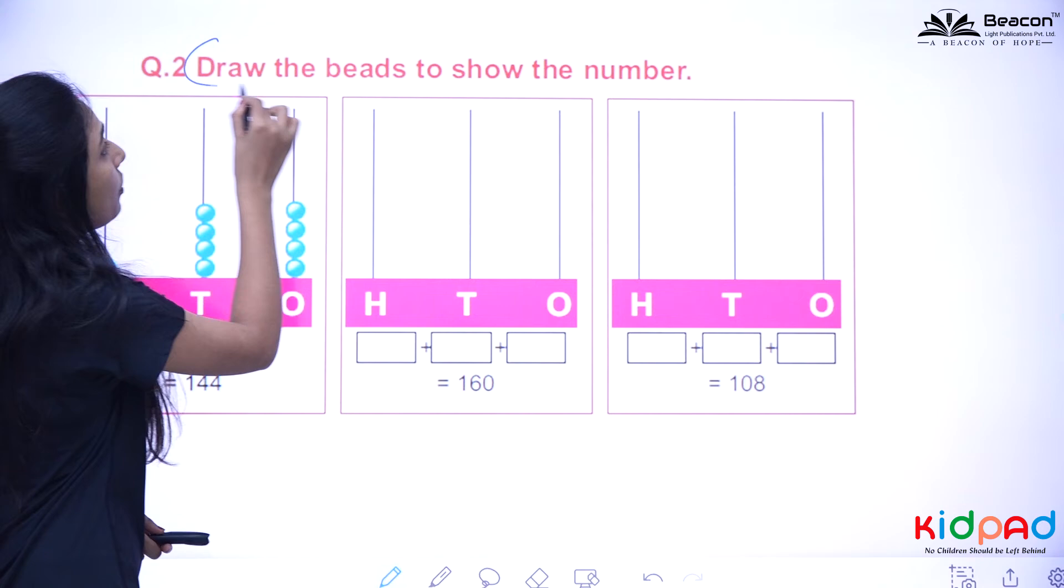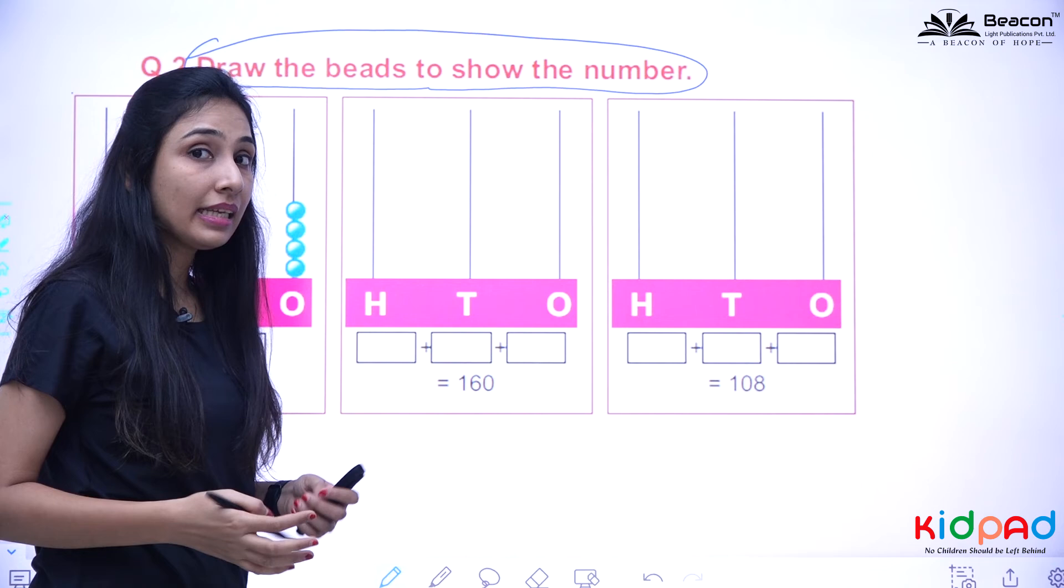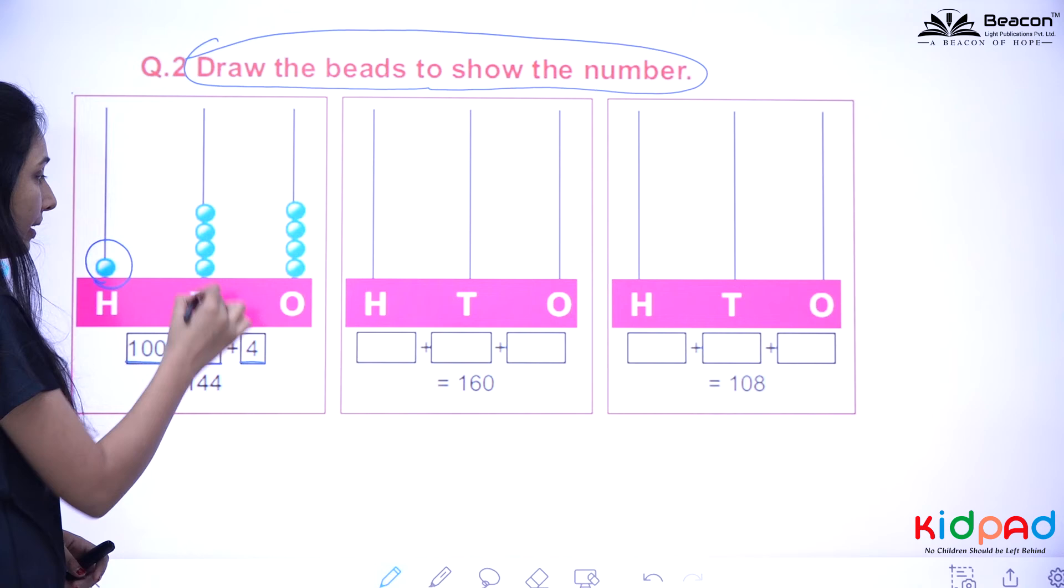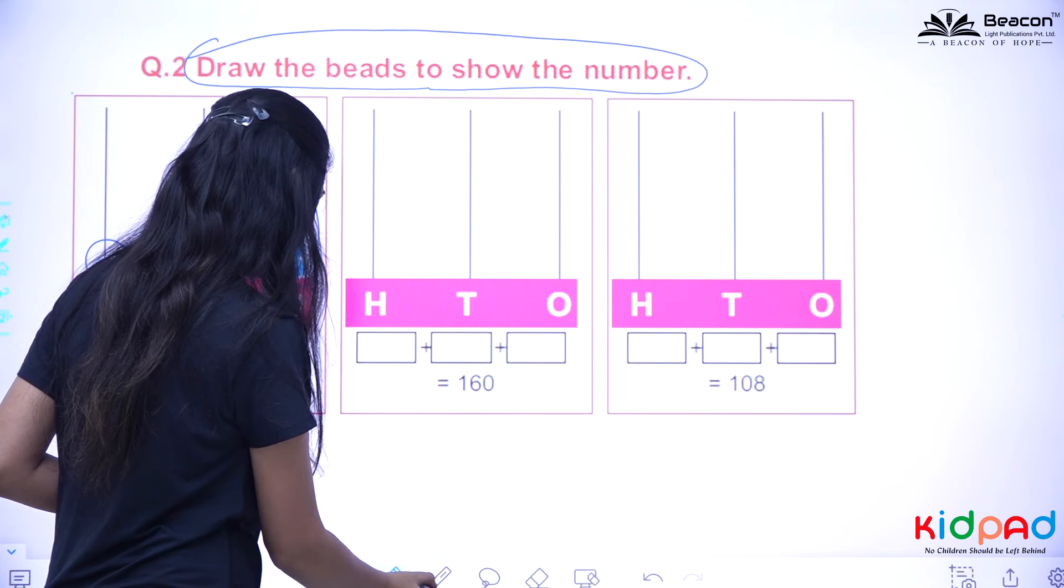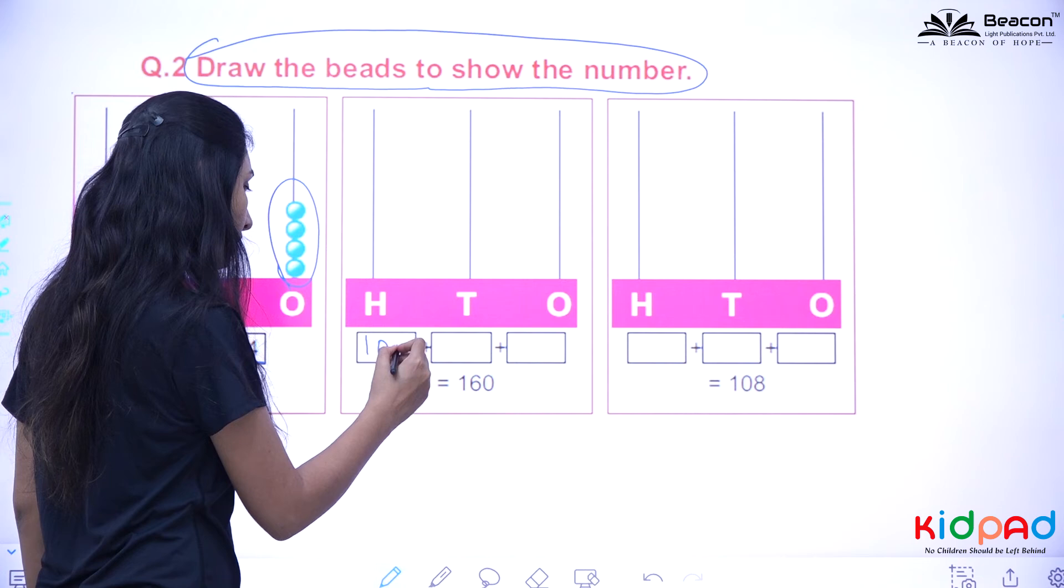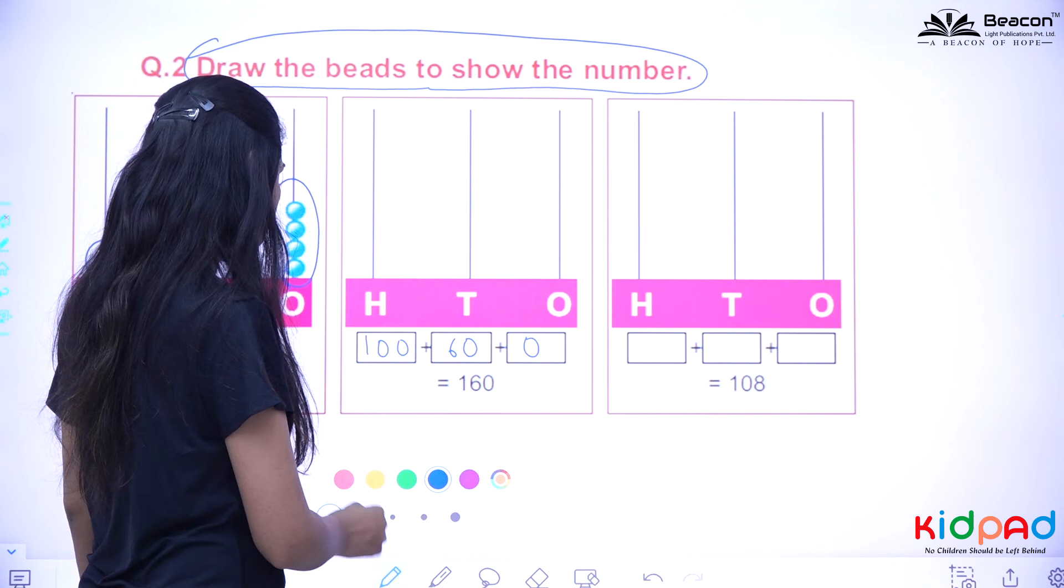Similarly, you are going to draw the beats to show the numbers. You have to show the beats for the given numbers. I will tell you the first one, and the second onwards you have to do as homework. This is your one hundred, forty, and four. Here you have one beat shown. That is four beats and four beats here. Now how will you show it here? You are given the number 160. That means you are going to write 100 plus 60 plus zero.